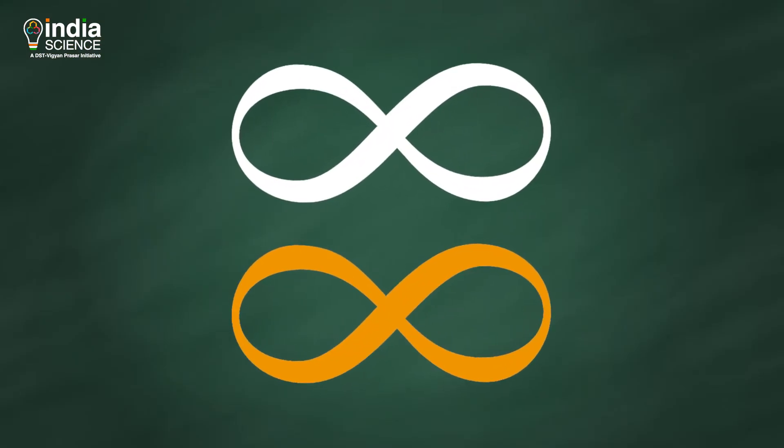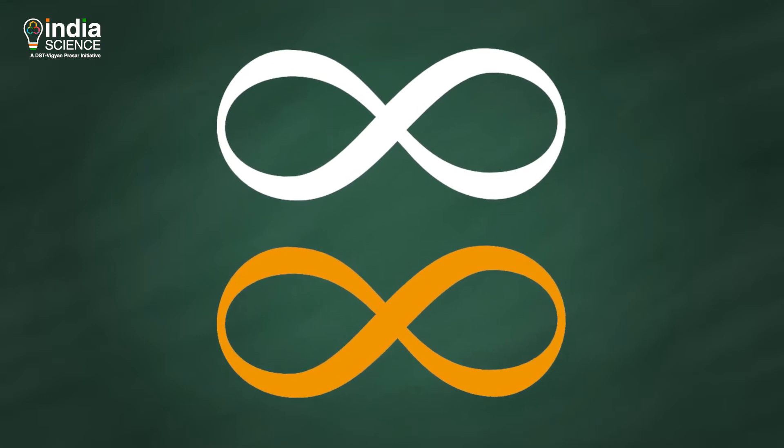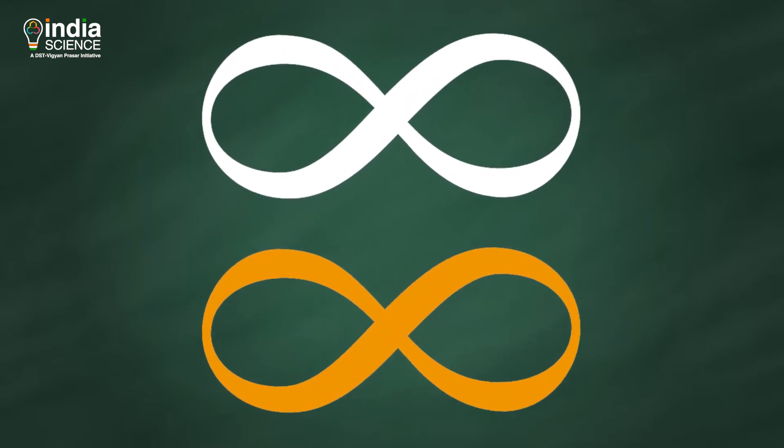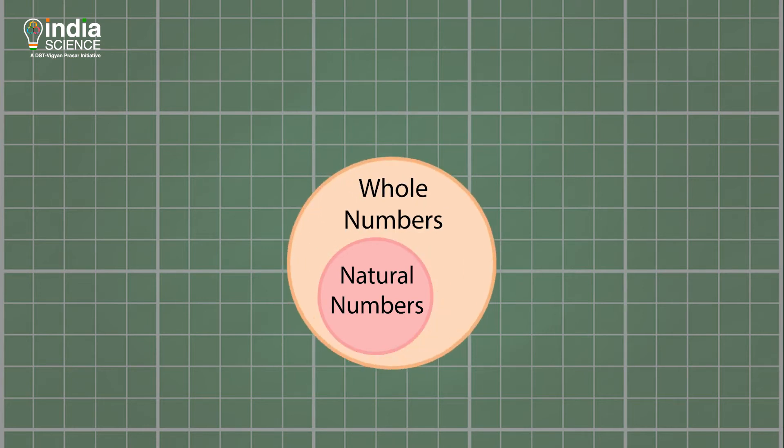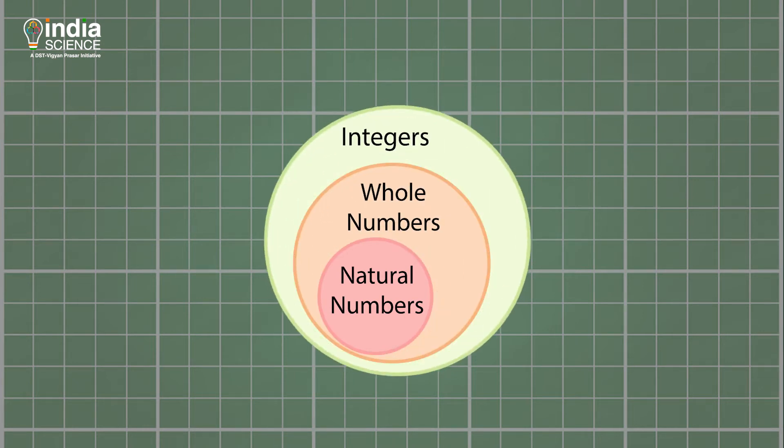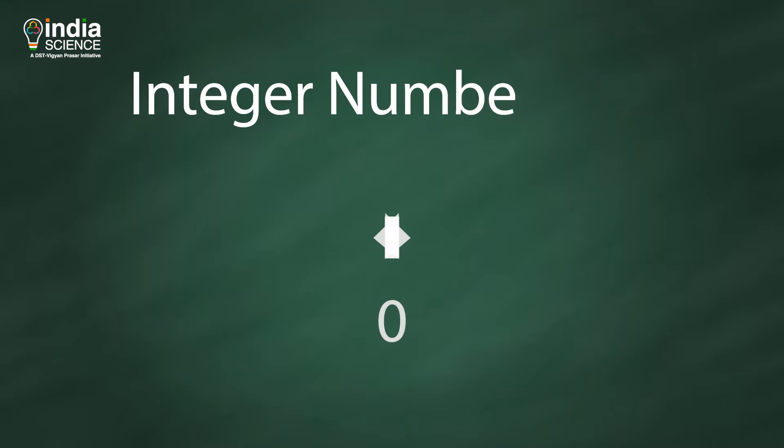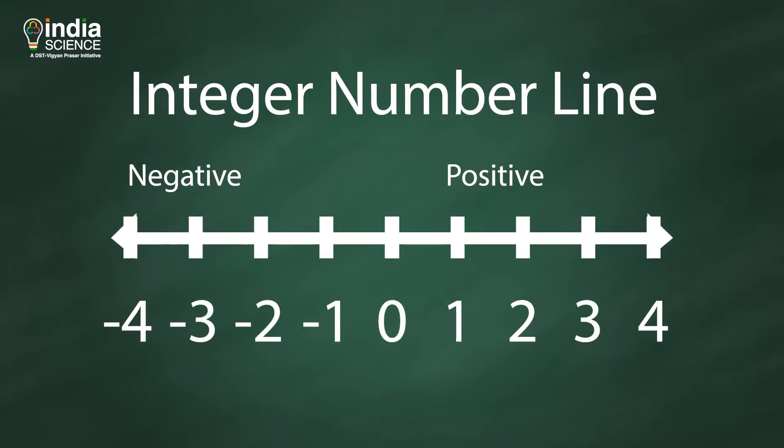Here too, we can say that the two infinities are equal because we can pair them up. This might seem odd since natural numbers are a part of integers, and each natural number is also an integer. But even though the natural numbers are fully contained in the integers, the two sets actually do have equal infinities.